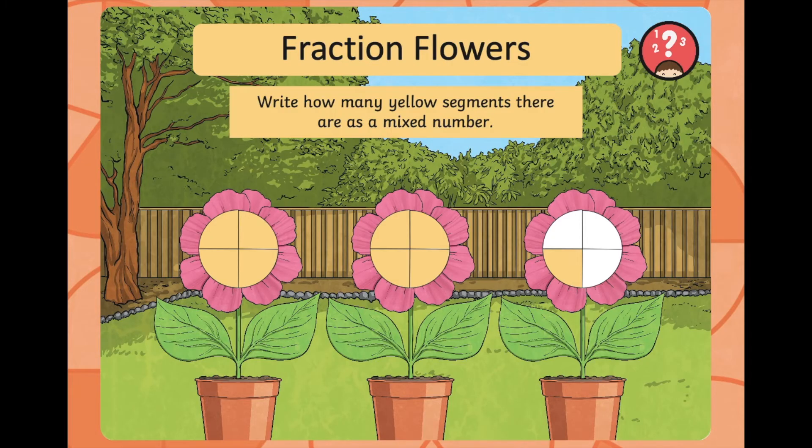So, fraction flowers. Write how many yellow segments there are as a mixed number. So write that down now. And hopefully you've got two and a quarter because there are two lots of whole flowers filled in and then one quarter left over, quarters because they are divided into four.